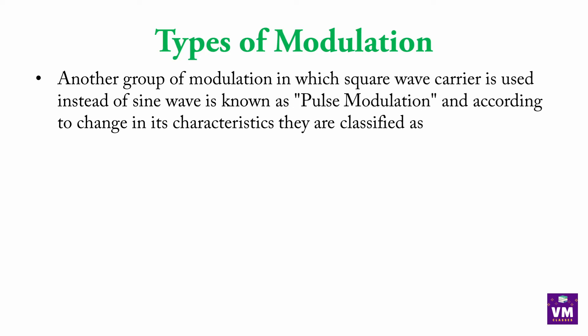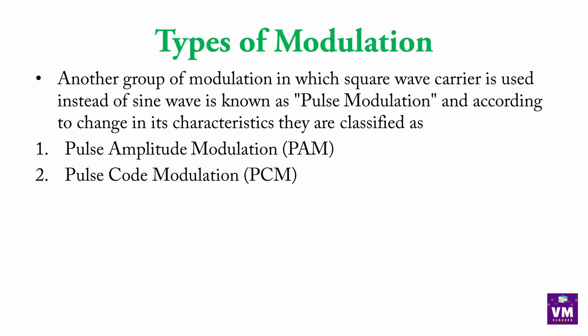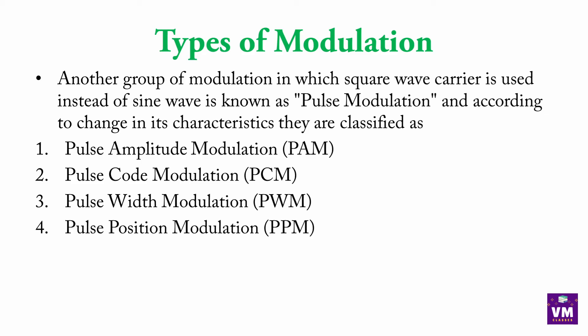According to the change in its characteristics, pulse modulation is further classified as: first, Pulse Amplitude Modulation (PAM); Pulse Code Modulation (PCM); Pulse Width Modulation (PWM); and Pulse Position Modulation (PPM). So in this way, using a square wave as a carrier wave gives us these types of pulse modulation.